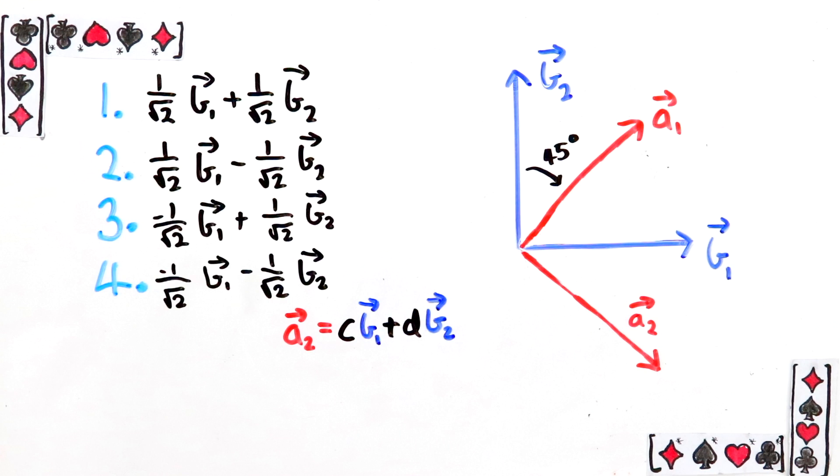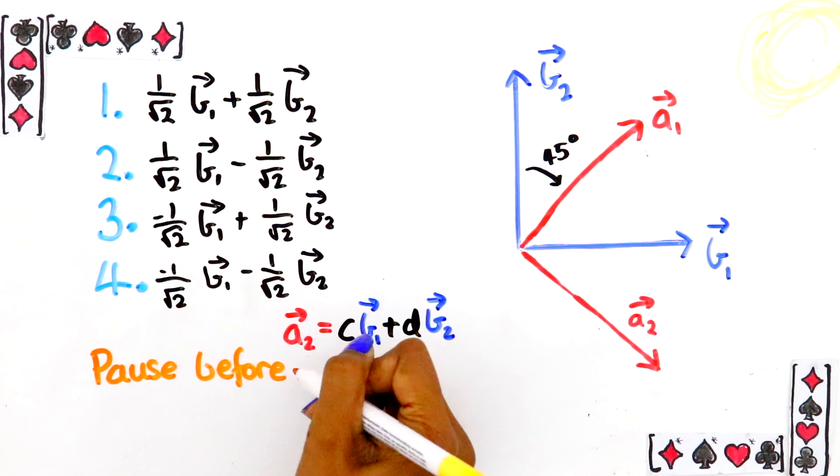Here are four different options, choose which it is, and put your answer in the poll in the corner. Don't worry, you don't need to do any calculation to figure it out. You should be able to work it out from where the minus signs are. Pause the video now to think about it.